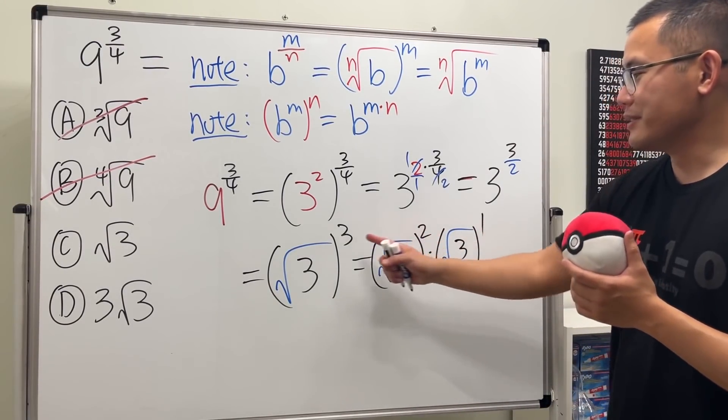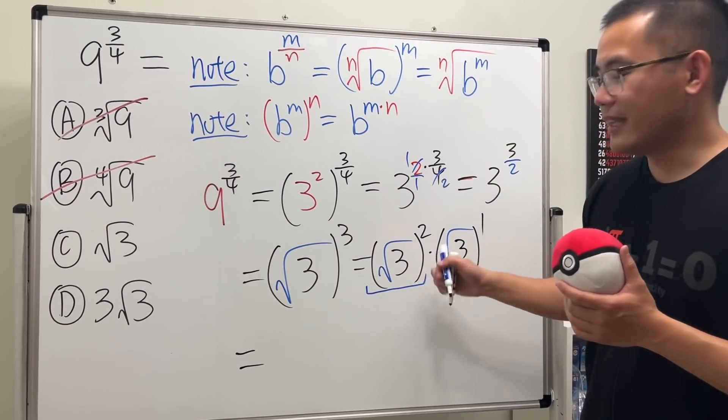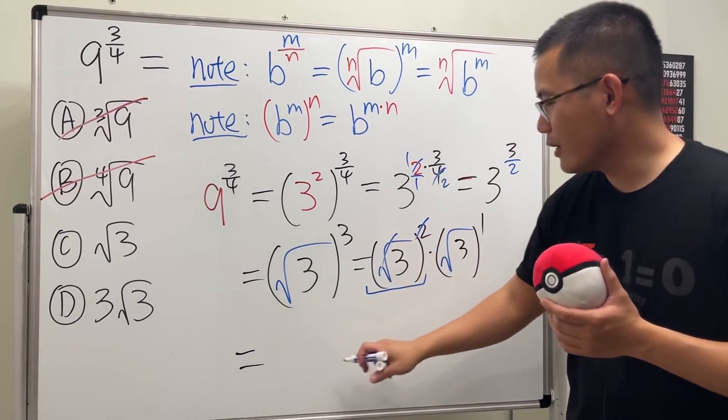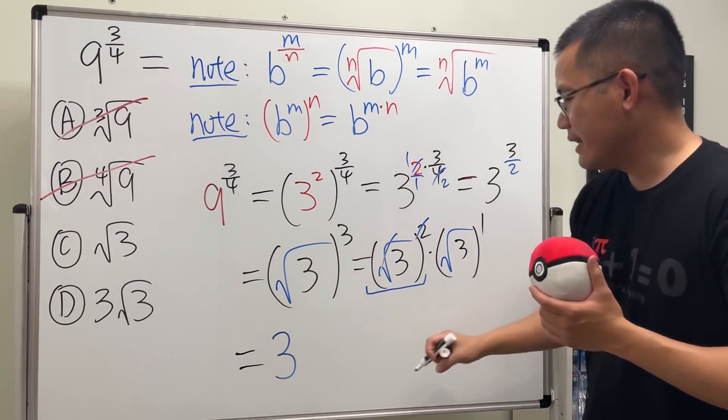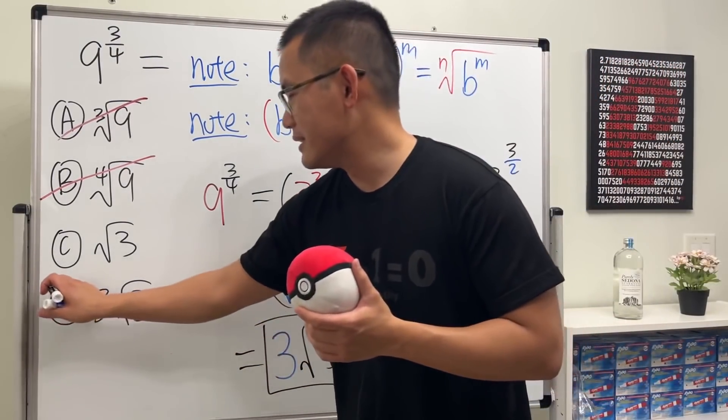So anyway, finally this thing is just a nice number three, because this and that cancel. So you have three times three, and then square root of three to the first power is just that. So as I said, the answer is D, just like this.